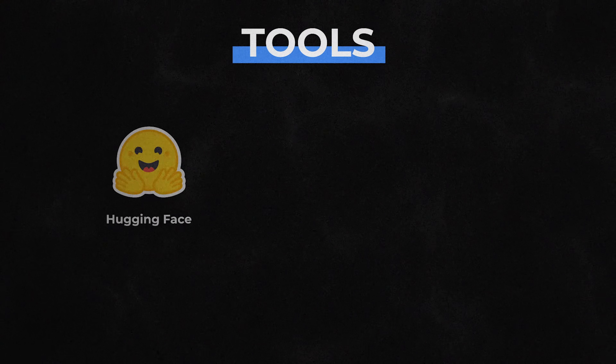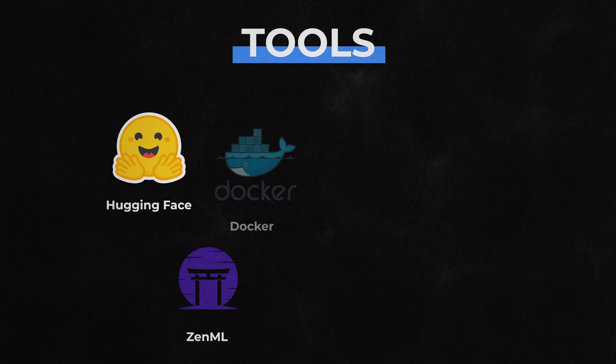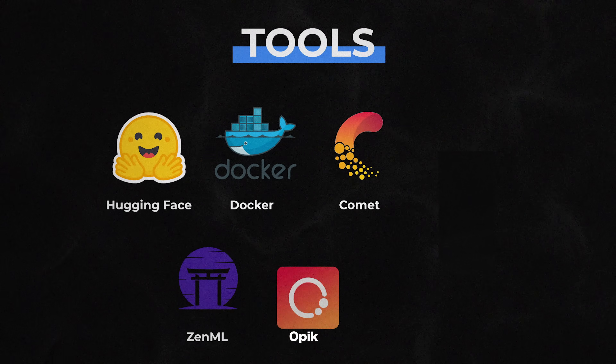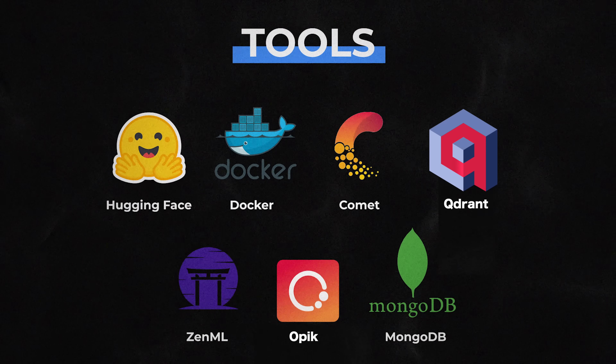Regarding tooling, this book introduces you to tools such as ZenML, Docker, Comet, Opik, MongoDB, Qdrant, and AWS SageMaker. One downside with these types of books is that tools can change and new tools are coming every day. Also, if you're building an AI system using the infrastructure at your company, some of these tools might not be relevant for you. Still, I believe this is a very useful book for AI engineers and developers.